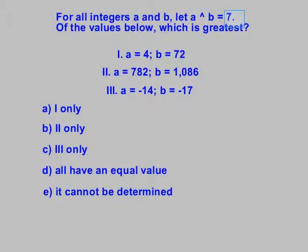Now, this is a goofy problem. This is one that's more of a puzzle than a math question. But it's easy points. Anything you put in for a and anything you put in for b comes up 7. So the correct answer here is d. They all have an equal value.